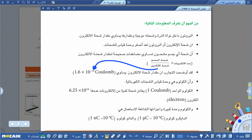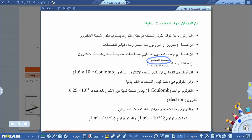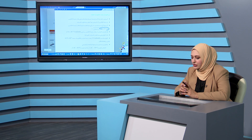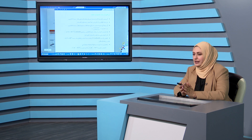شحنة الإلكترون ثابتة وهي 1.6 في 10 السالب 19 كولوم. في حال أردنا حساب عدد الإلكترونات في جسم، نضع شحنة الجسم في بسط الكسر وفي المقام نضع شحنة الإلكترون 1.6×10⁻¹⁹، نطبق القانون ونقسم فنحصل على عدد الإلكترونات. هذا القانون من أهم القوانين.